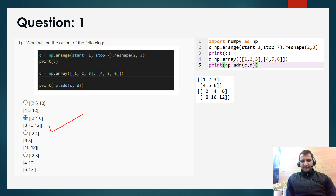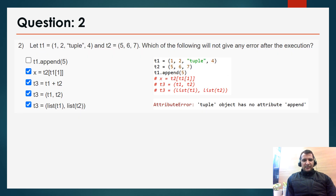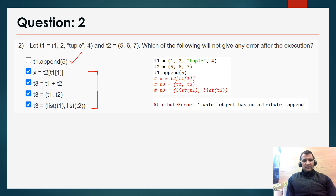Question 2: let t1 equal to this one and t2 equal to this one. Which of the following will not give any error after execution? I put t1, t2, and t1.append(5) into Spyder IDE. Only t1.append(5) gives an error because a tuple object has no attribute append. The rest of the commands have no execution error. Since it is a multi-select question, b, c, d, e are the correct answers.